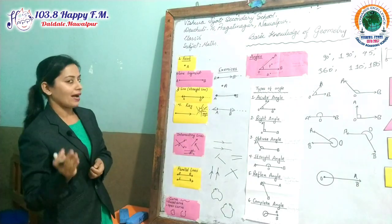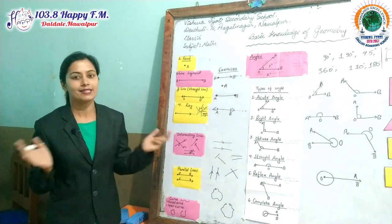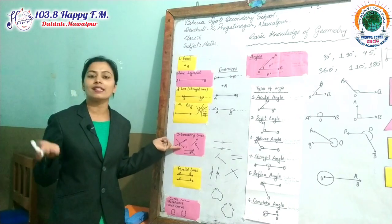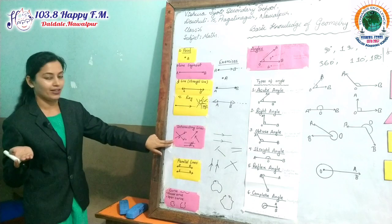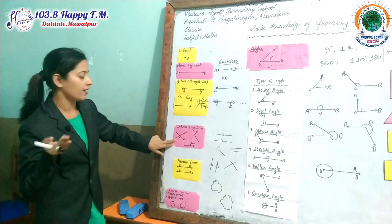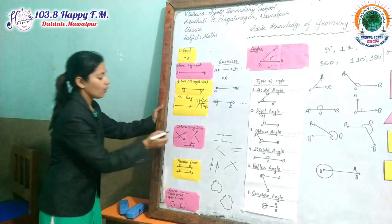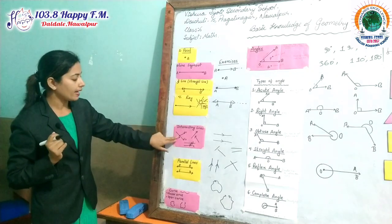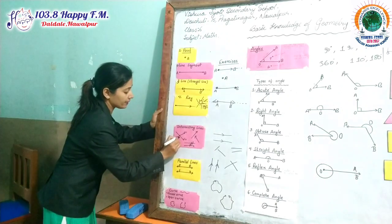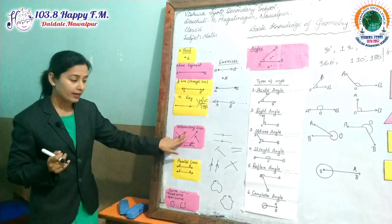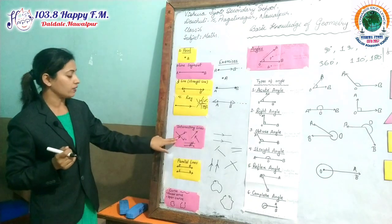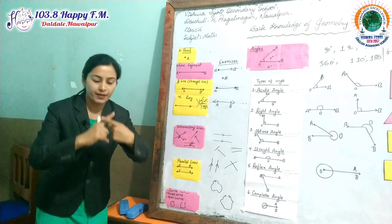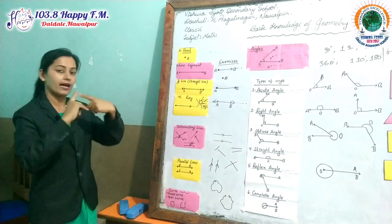Now I want to move to the next topic: intersecting lines and parallel lines. First, I am going to discuss intersecting lines. You can see the figure on the board. Intersecting lines are those lines when two lines meet at a common point. They intersect at point P. Line one and line two can each be extended, and P is the common point of both lines. When lines cross and meet each other, that is an intersecting line.